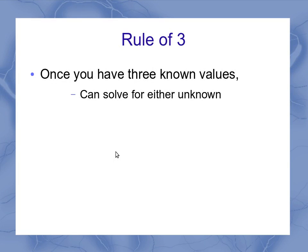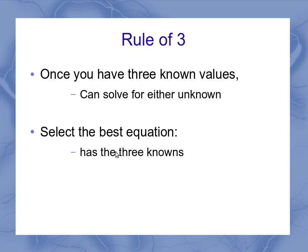So once you have three known values, then you can solve for either one of the unknowns. And when you're selecting the best equation, you want to pick out the one that has those three knowns and the unknown you want.